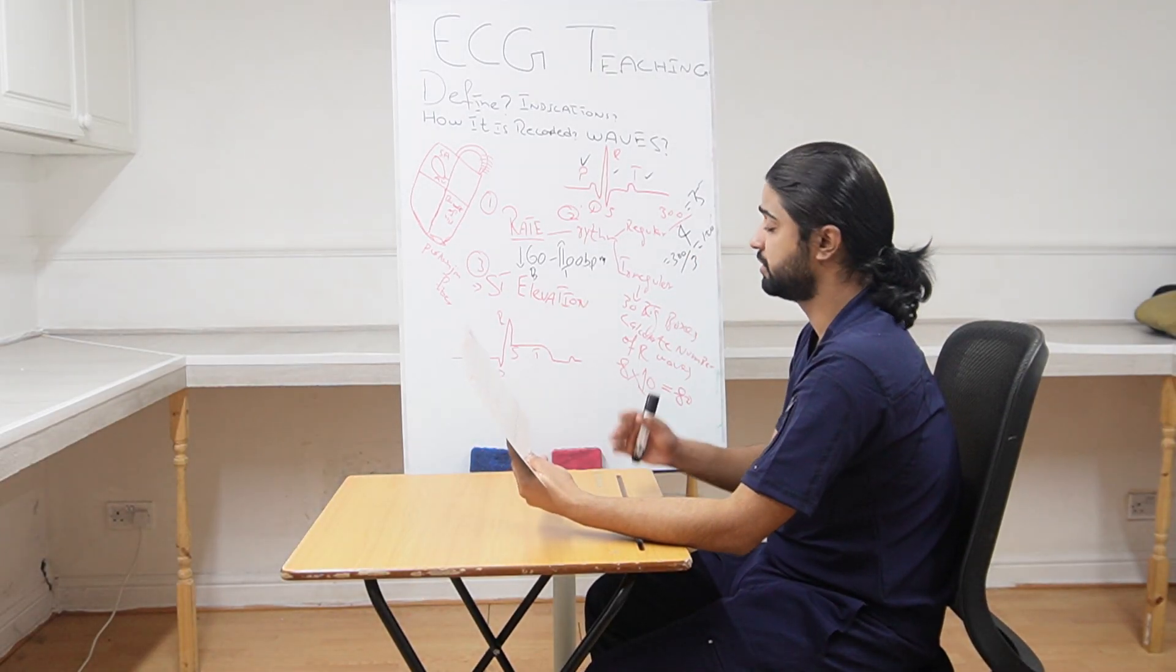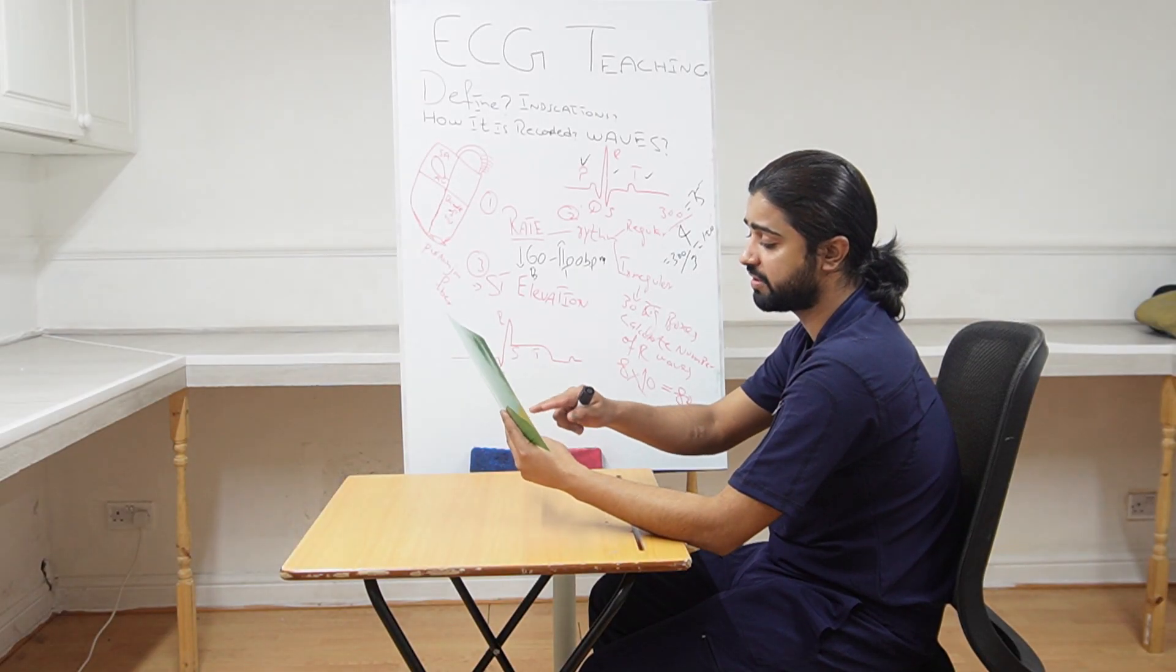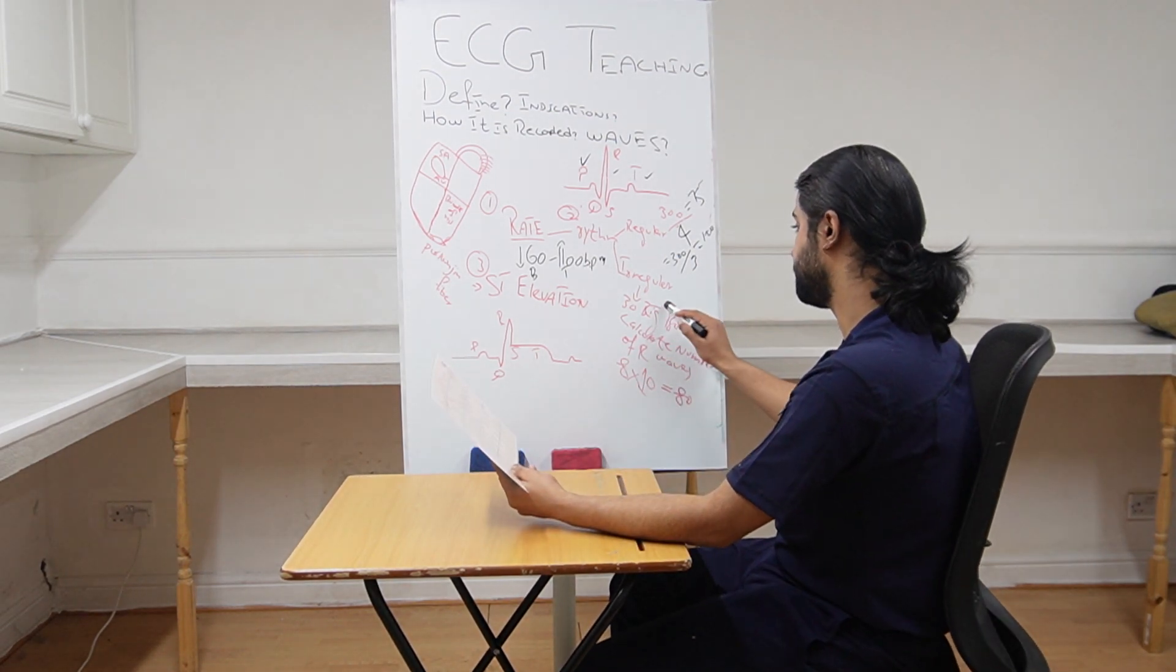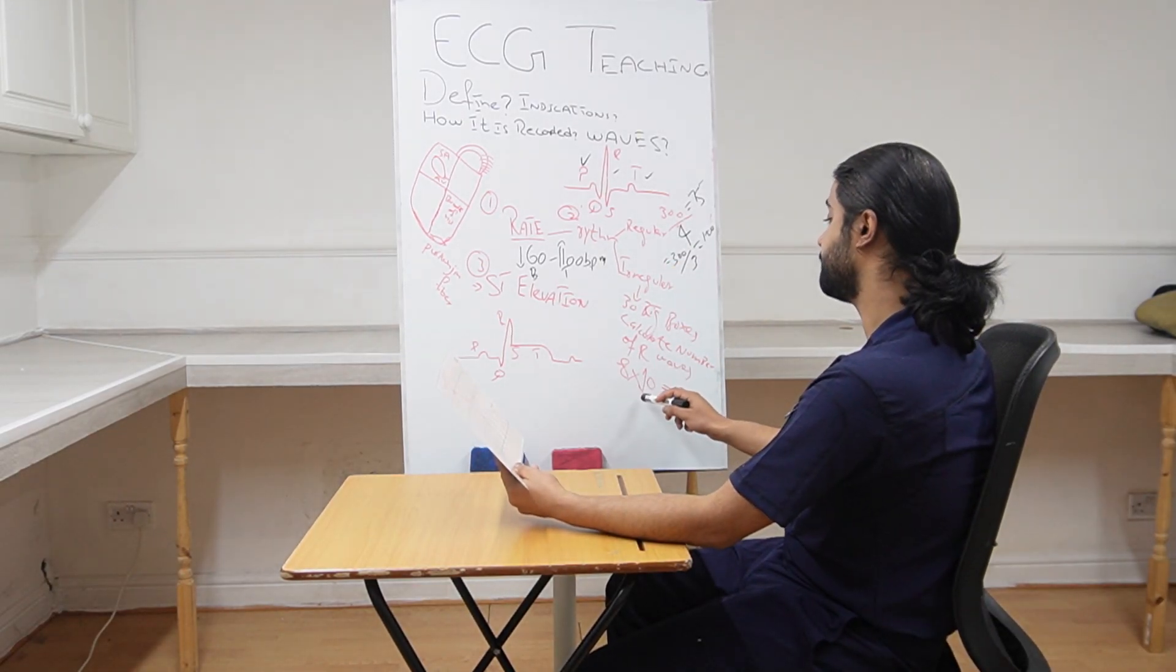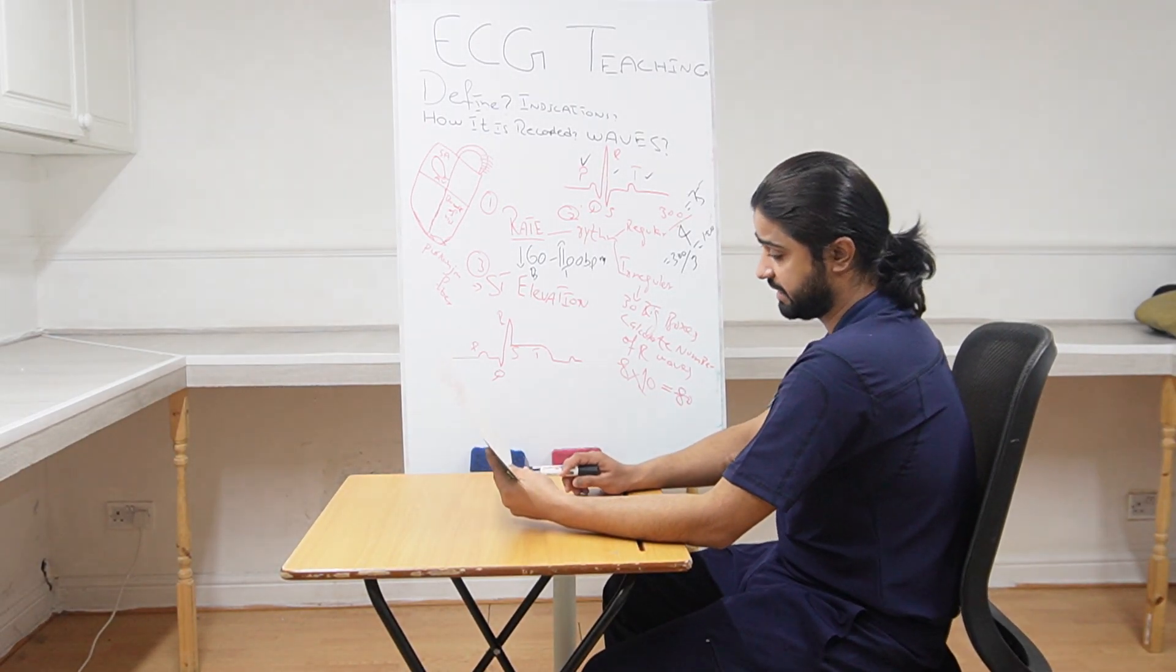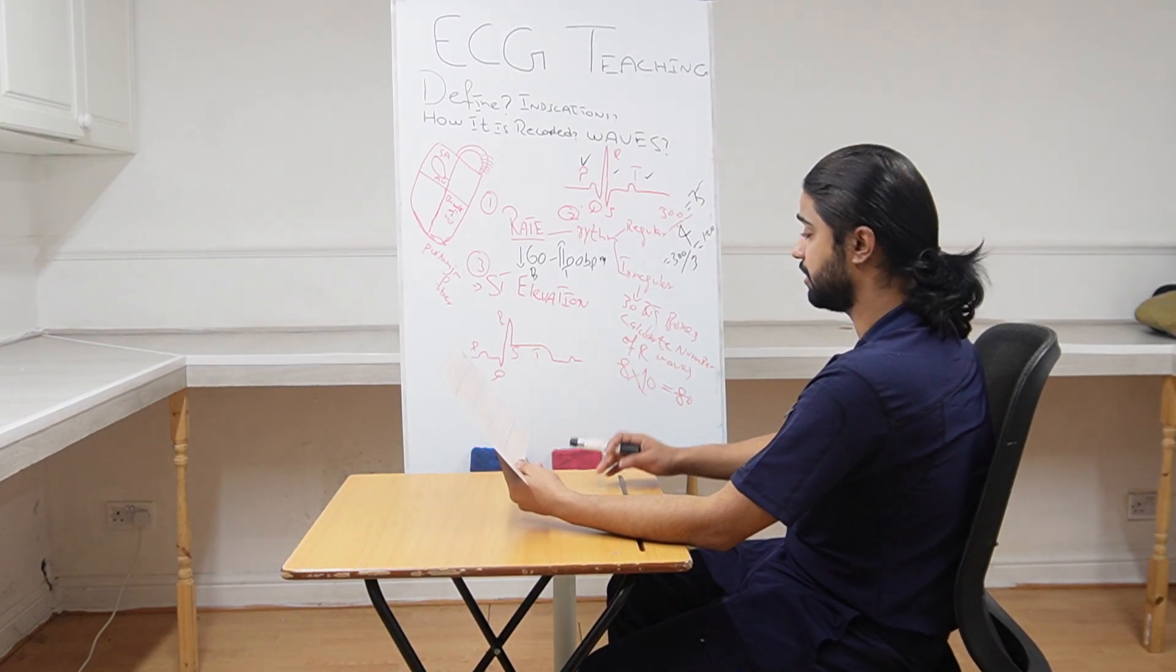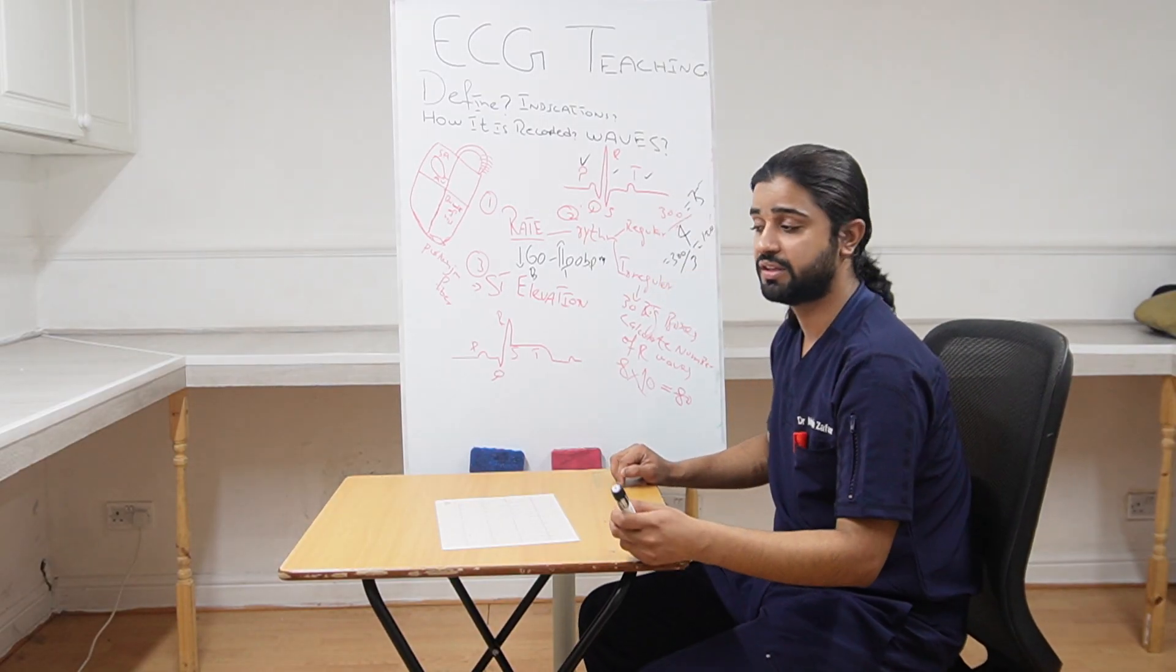You need to count 30 big boxes. Count 30 big boxes, one, two, three, four, five, up to the 30, and then count the number of R waves in between 30 big boxes. 30 big boxes if rhythm is irregular, and calculate the number of R waves and then multiply them by 10. So if in this ECG after calculating the 30 big boxes, the number of R waves is eight, multiplied by 10, so it is 80. And if it is seven, it is 70. It depends how many R waves you are going to find in 30 big boxes. This is how to calculate the rate if rhythm is irregular.